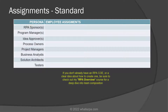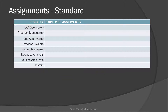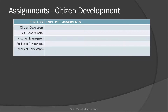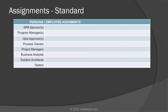Now you have to start thinking about who the employees will be in your company that will fill these personas. For the standard workflow, who will be your RPA sponsor, your program manager, your idea approvers, process owners, and so on. If you're going to have a citizen development program, you need to do the same thing for that lane — decide who your citizen developers are, who the power users might be, and who the program managers are. It's possible that the program managers for citizen development could be the same as the program managers for the standard lane.